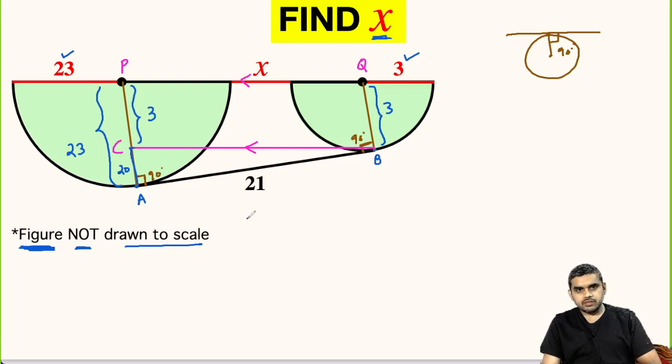Now what we need to do is take out this triangle. Let us draw it separately. This is point B, point A 90 degrees, and this is point C.